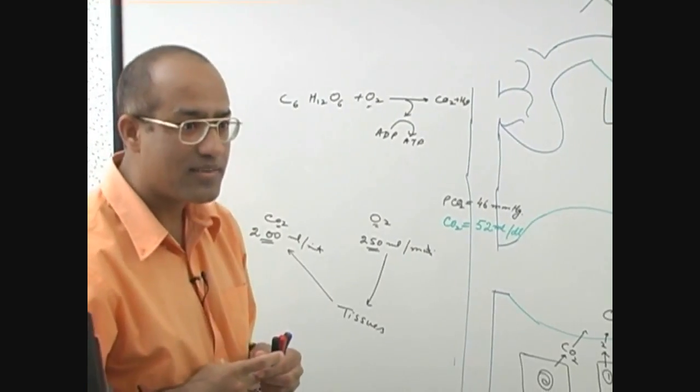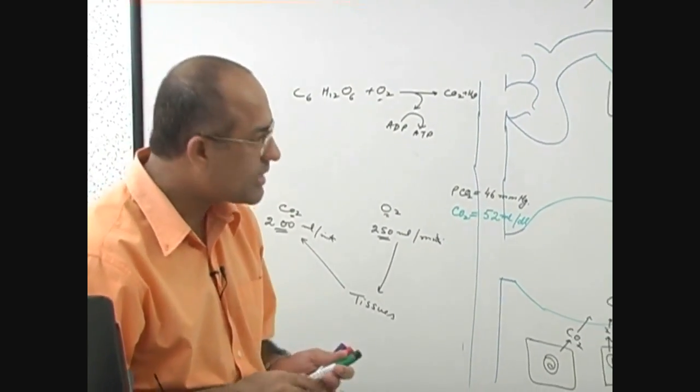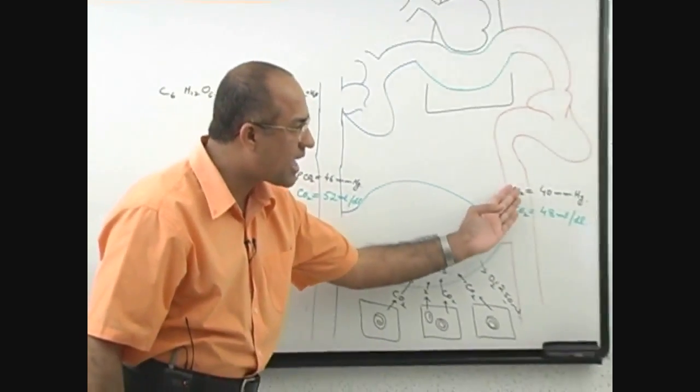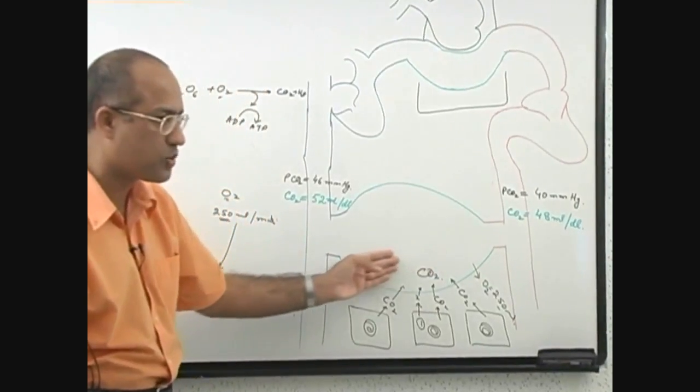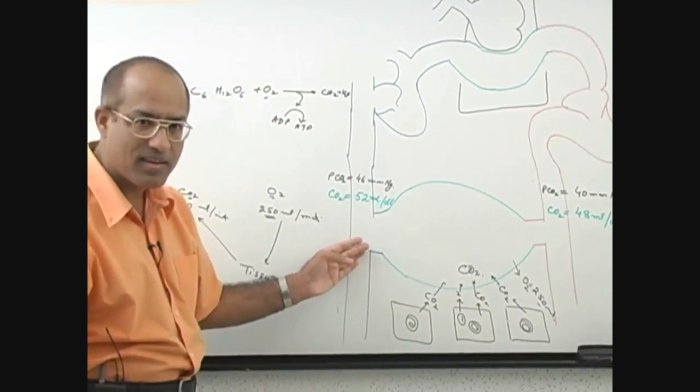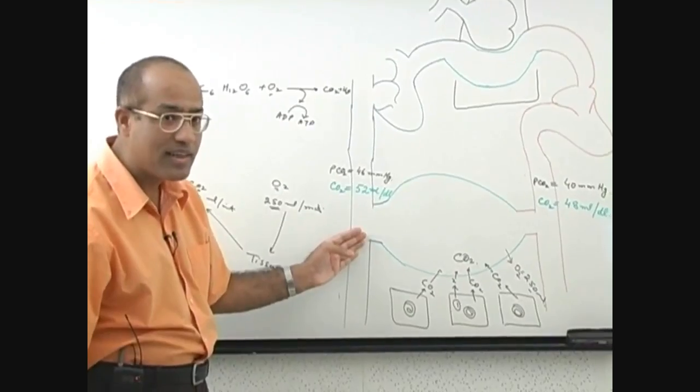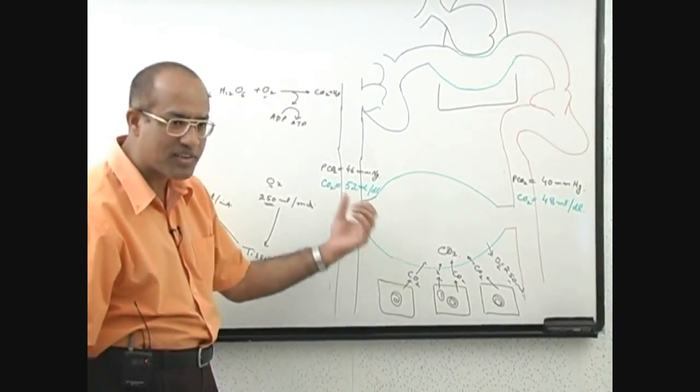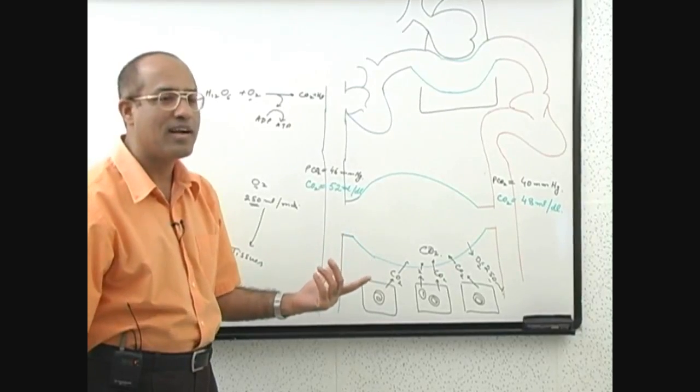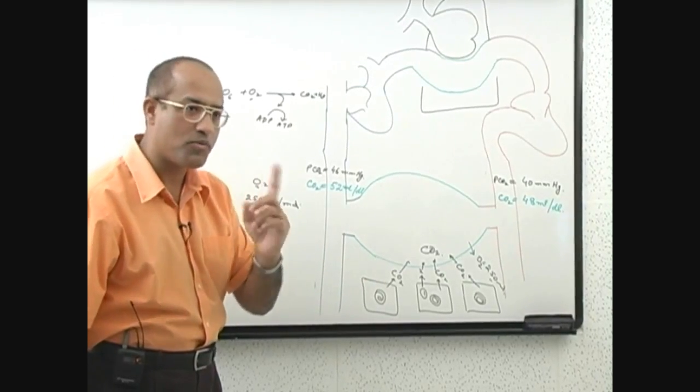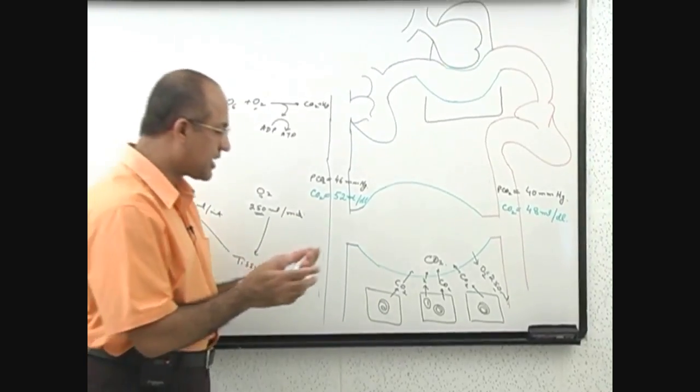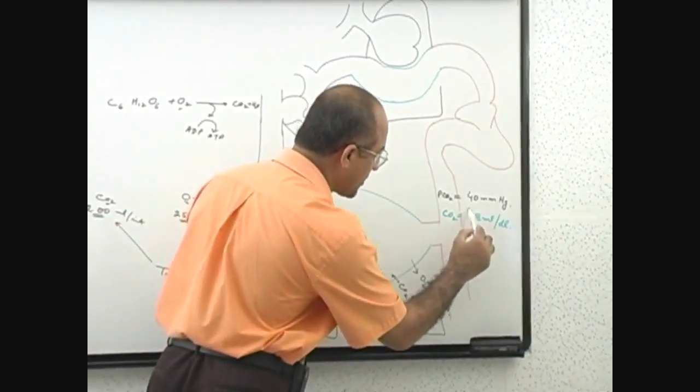What does it mean? It means that whenever 100 ml blood passes through the peripheral tissue which is resting, on average it picks up how much carbon dioxide from the tissue? 4 ml. It picks up 4 ml, is that right? So now we can say, because of course here it is 48 and now it is becoming 52.